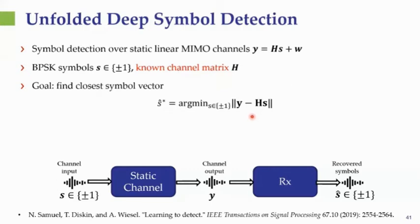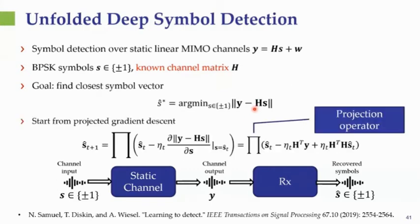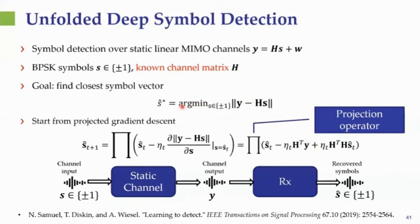To tackle this problem when dimensions are large, one uses projected gradient descent. This means minimizing the distance using gradient descent: at each step, take the current estimate, subtract the gradient with respect to the symbols times a step size η_t, then apply a projection operator π because symbol values must be in {+1, −1}. Taking the gradient explicitly yields the projected gradient descent update for this problem.